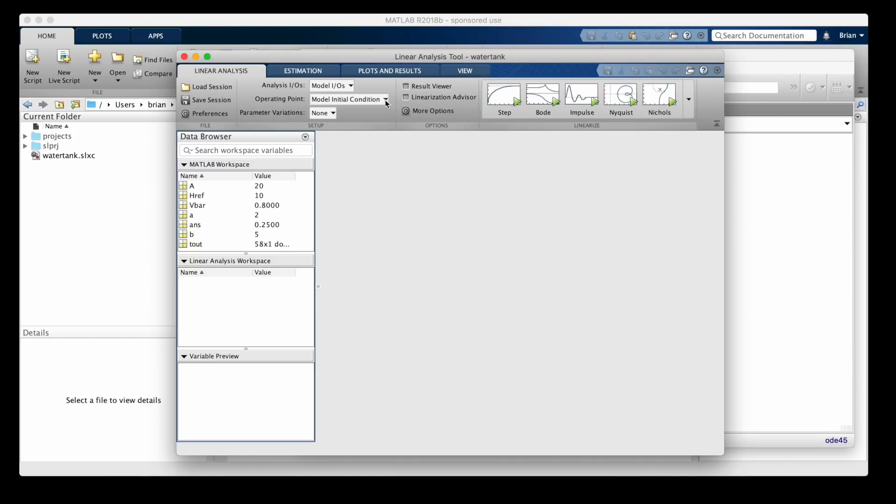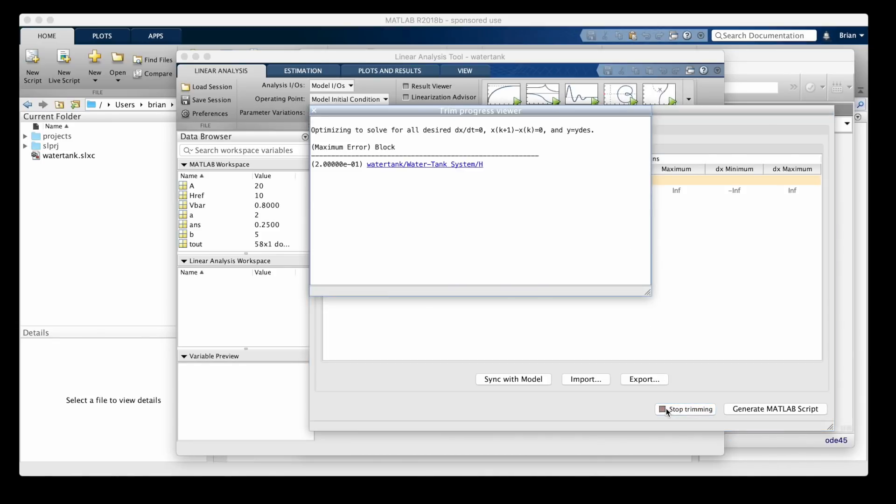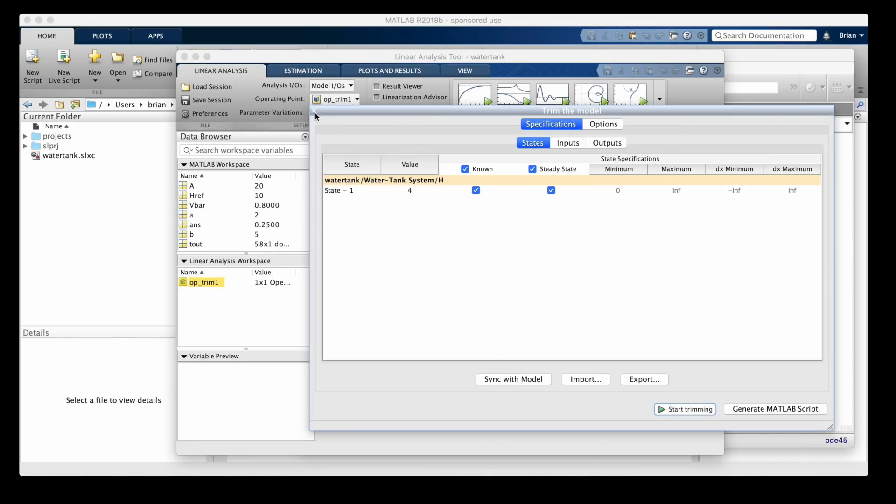Here, we pick the states and inputs that we want to fix to a specific value, and then let the software determine the values of the free states and free inputs that make it steady state. I'll set the desired height to 4, and let the software calculate the necessary input voltage.